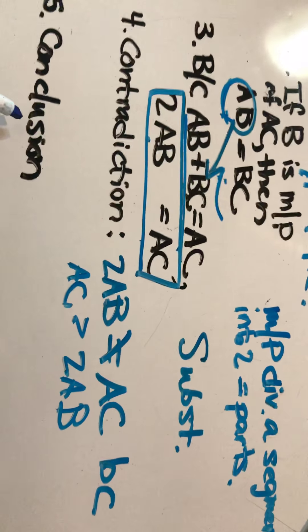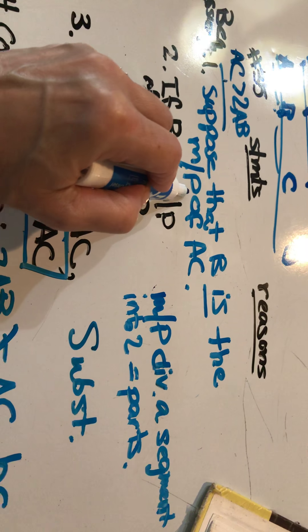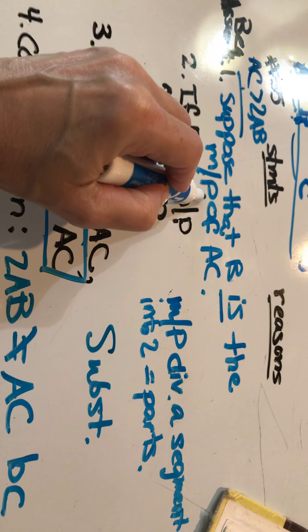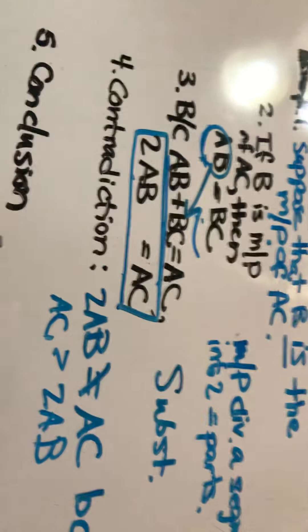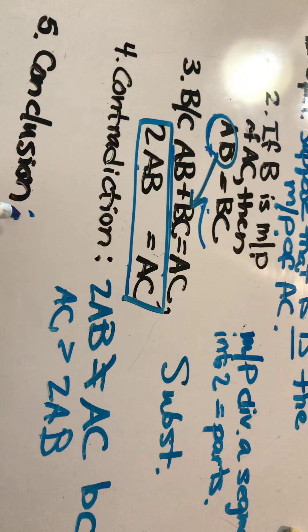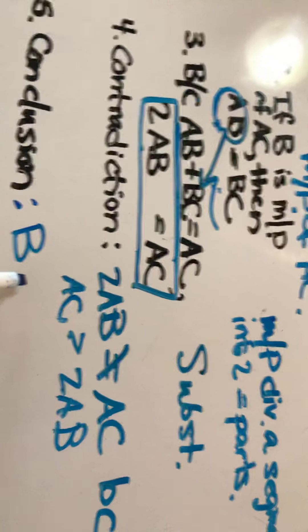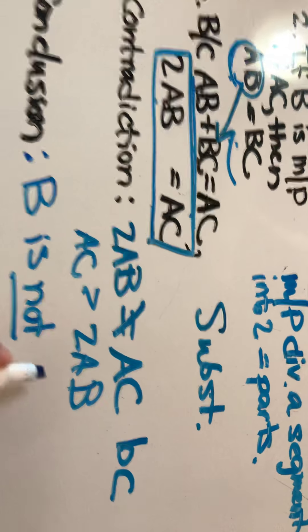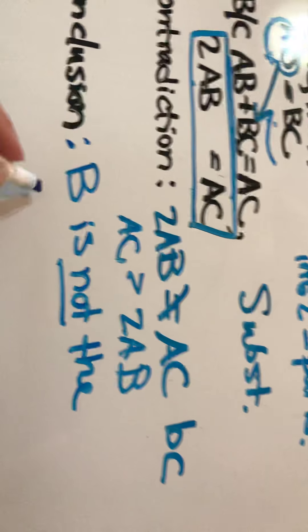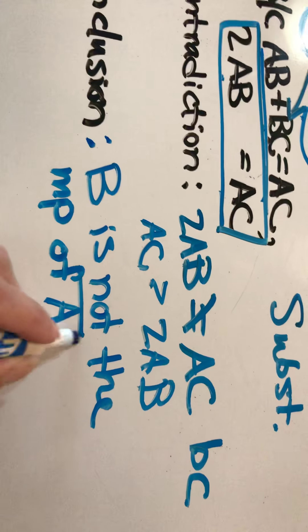So the conclusion is not what we originally supposed, which is the opposite of what we were trying to prove, but actually what we were trying to prove is true. So the conclusion was, is, B is not, it is not the midpoint of segment AC.